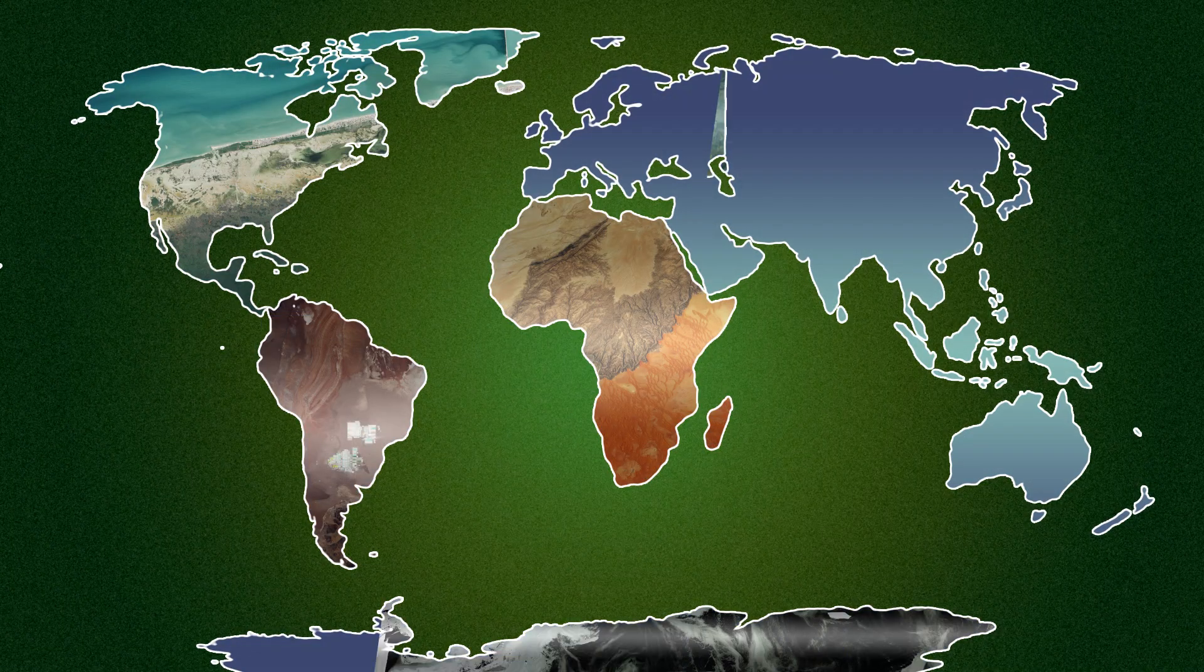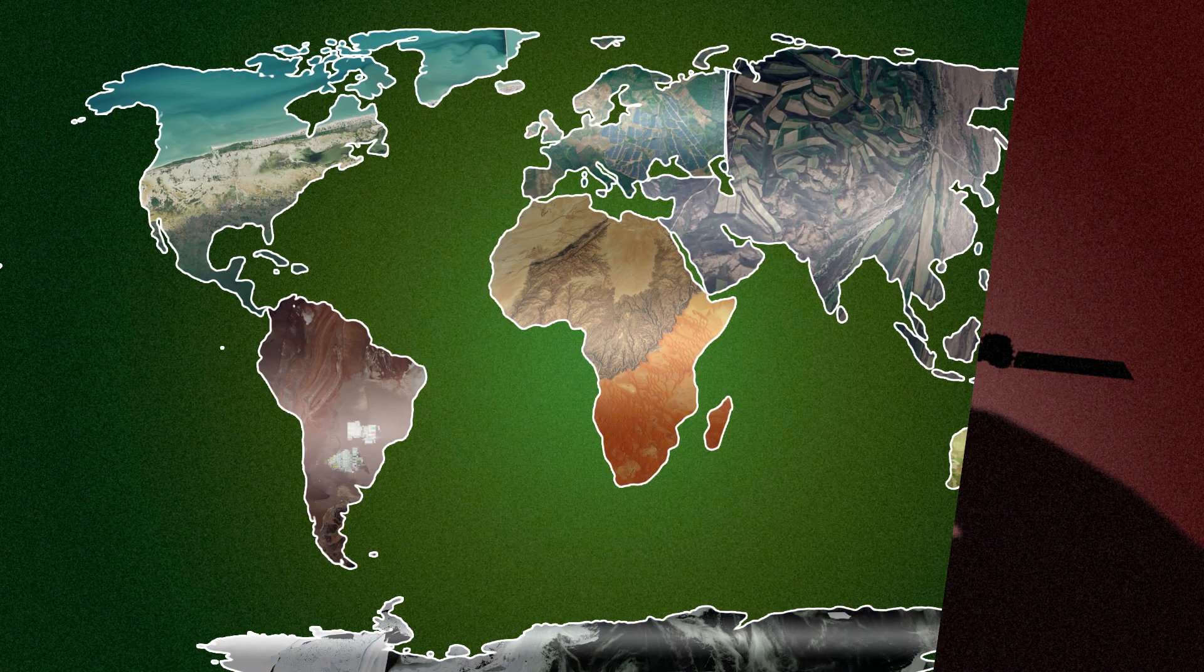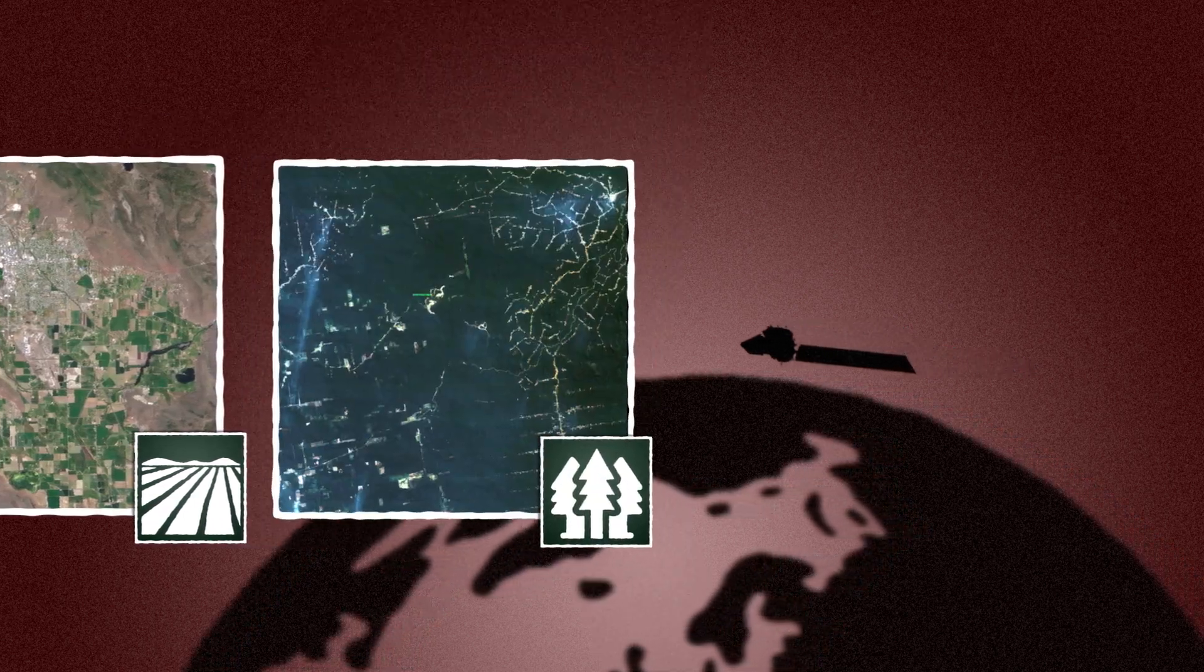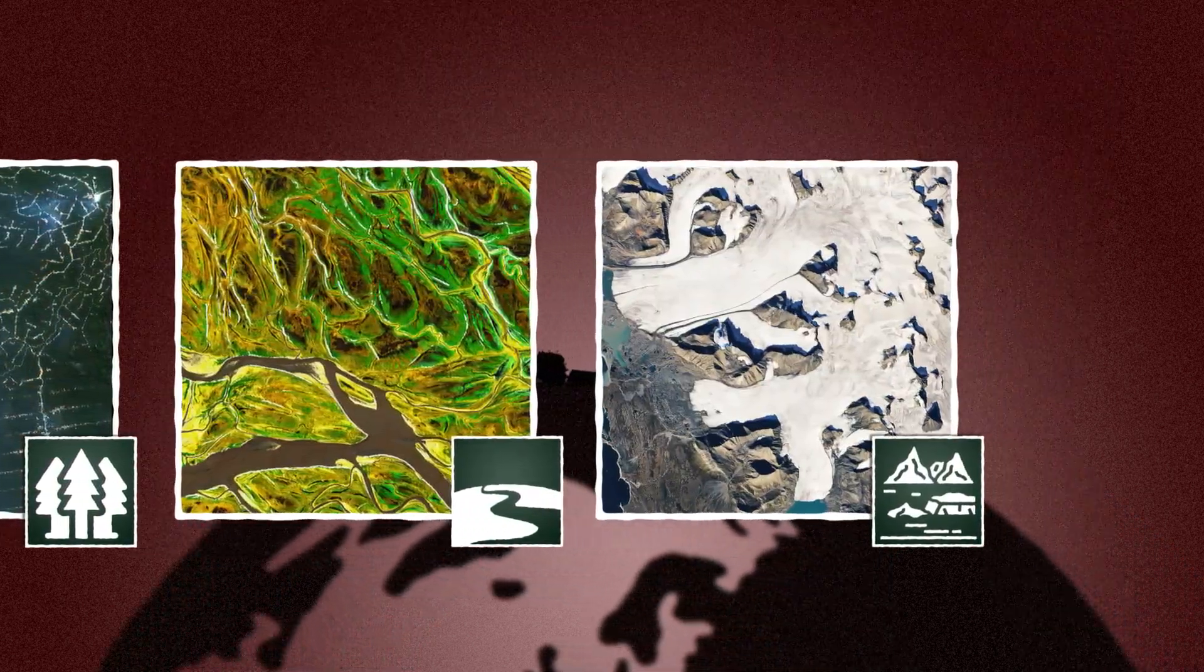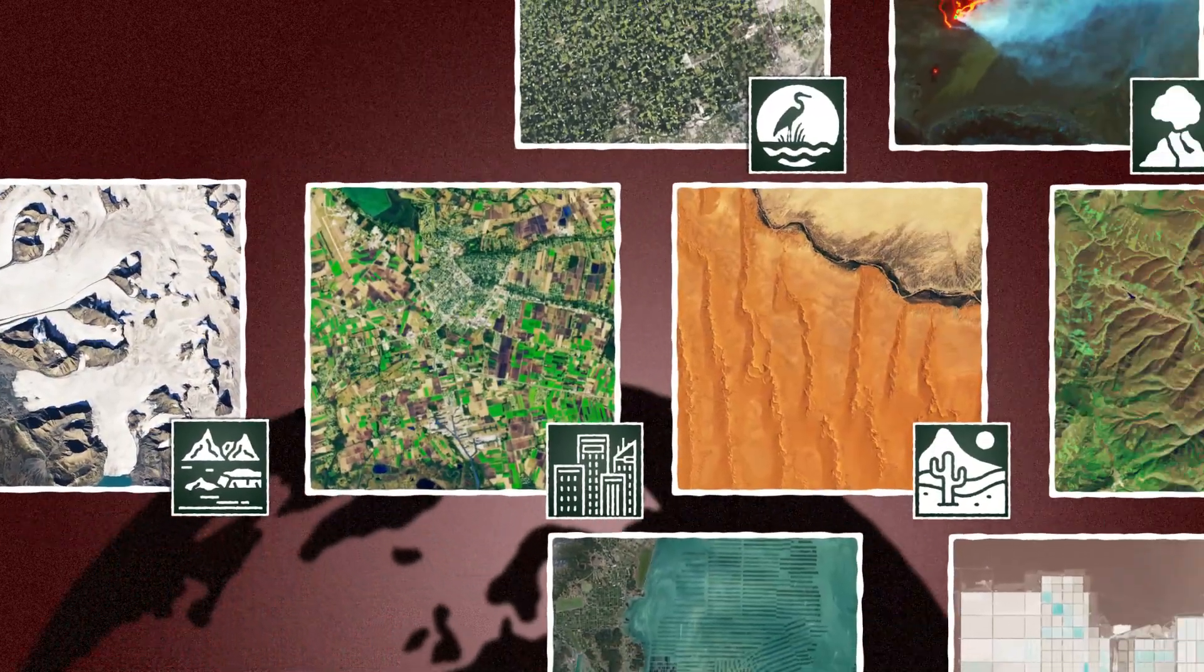Landsat collects images of each of our planet's seven continents. Farms, forests, waterways, glaciers, urban areas. Landsat sees it all.